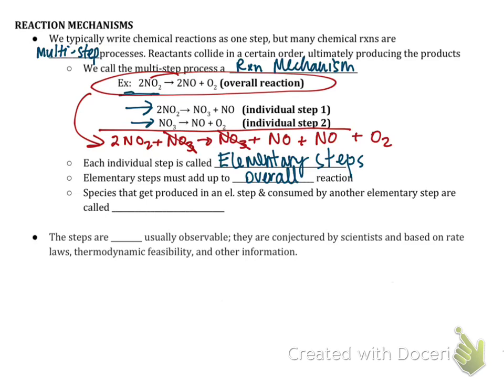The species that get produced in one elementary step and then consumed by another elementary step are called intermediates. See if you can identify the intermediate in this reaction mechanism. Hopefully you've realized that NO3 is our intermediate — it's produced in step one and consumed in step two. It's not a reactant we mixed in the beaker, and it's not a final product; it's something that forms along the way and is immediately consumed. These steps are usually not observable because they happen quickly and are conjectured by scientists based on rate laws and other data.